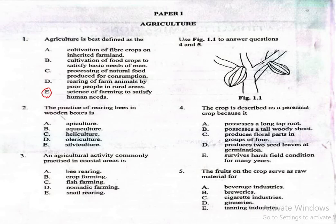Agriculture is broadly the science and art of farming, including the cultivation of crops and the rearing of animals to satisfy human needs. So, the right answer is E.